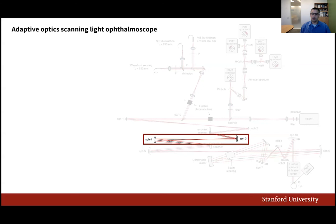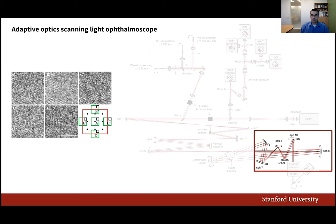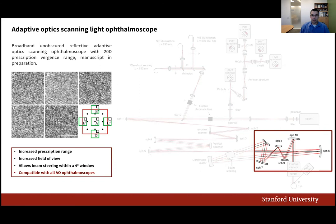After nearly two decades of empirically designing reflective ophthalmoscopes, we used nodal aberration theory to rigorously describe the performance of the afocal telescopes that are their fundamental building blocks. This insight allowed us to develop better ophthalmoscopes and to propose and demonstrate a four-element pupil relay with almost double the spectacle prescription range, greatly increasing the fraction of the population that can be successfully imaged.